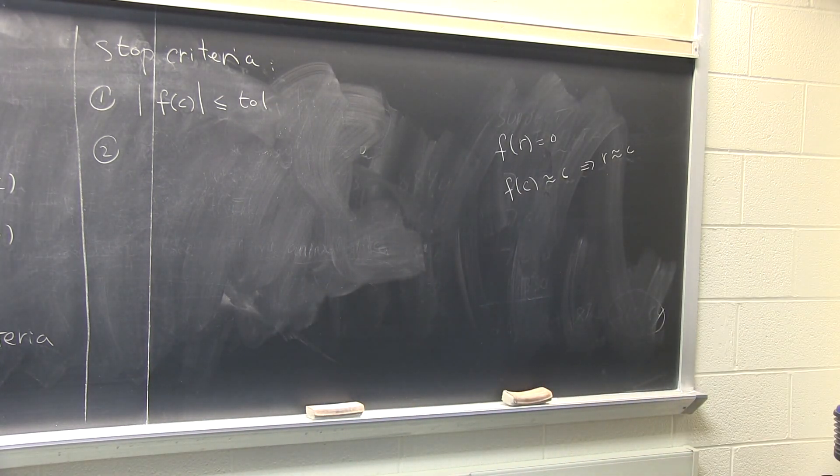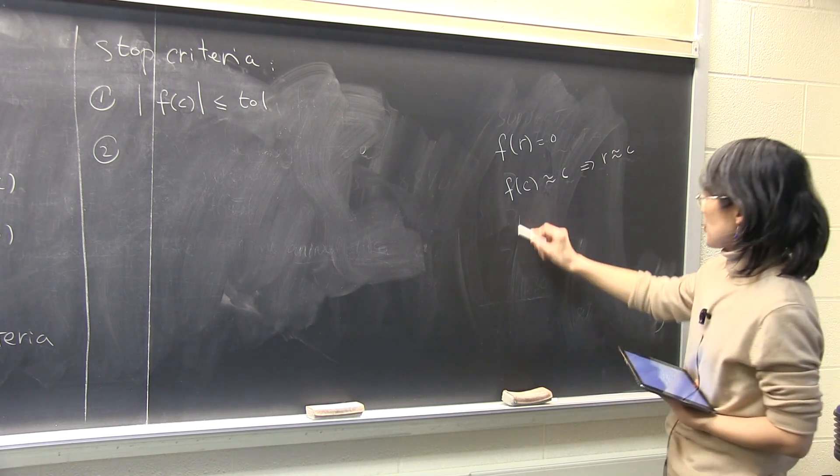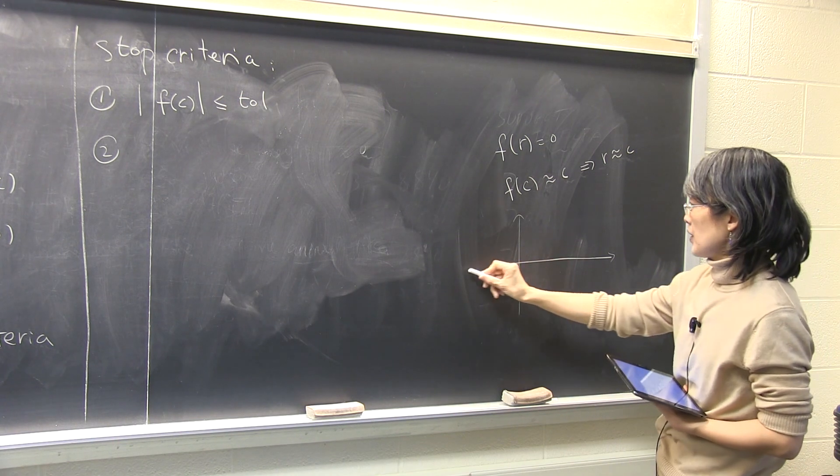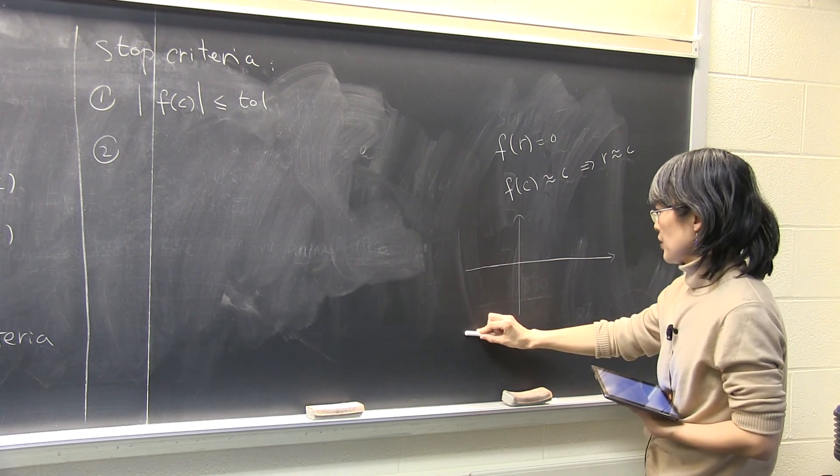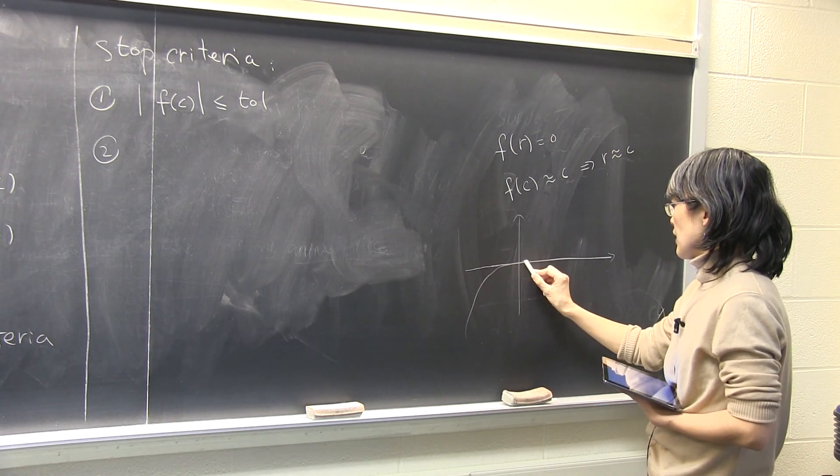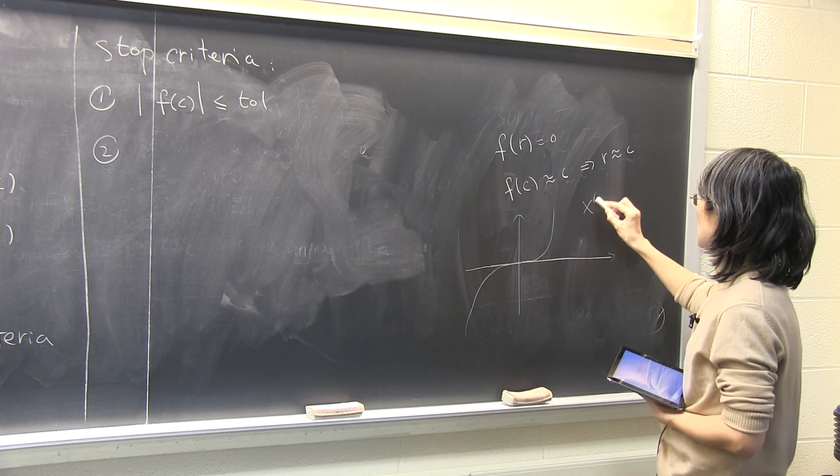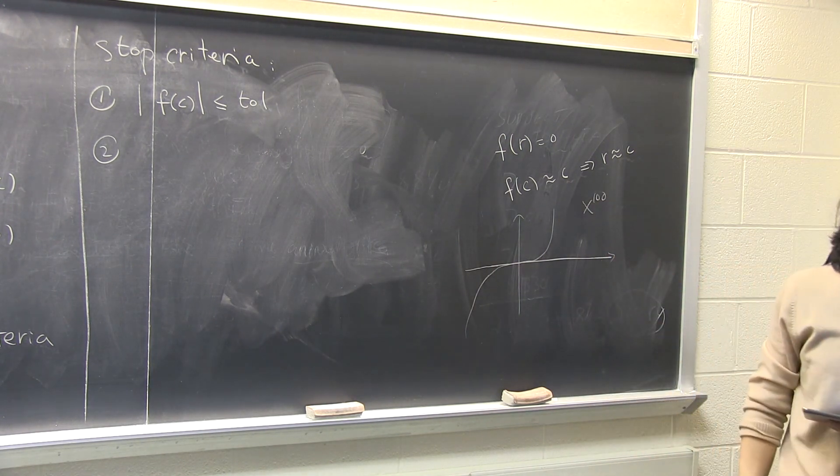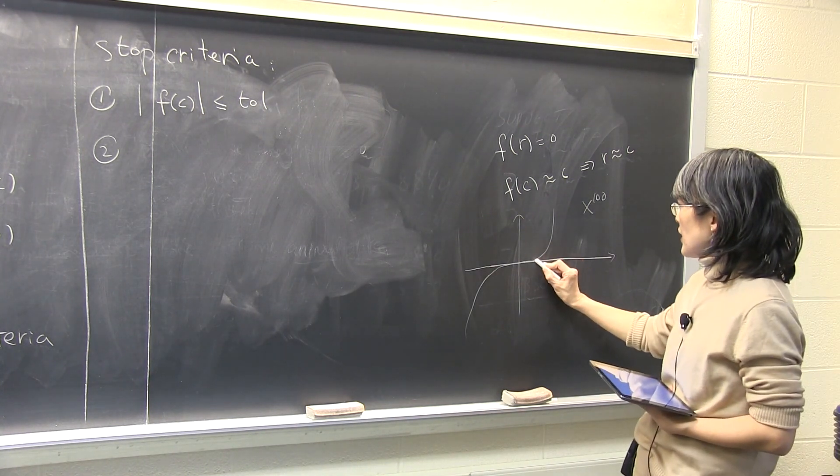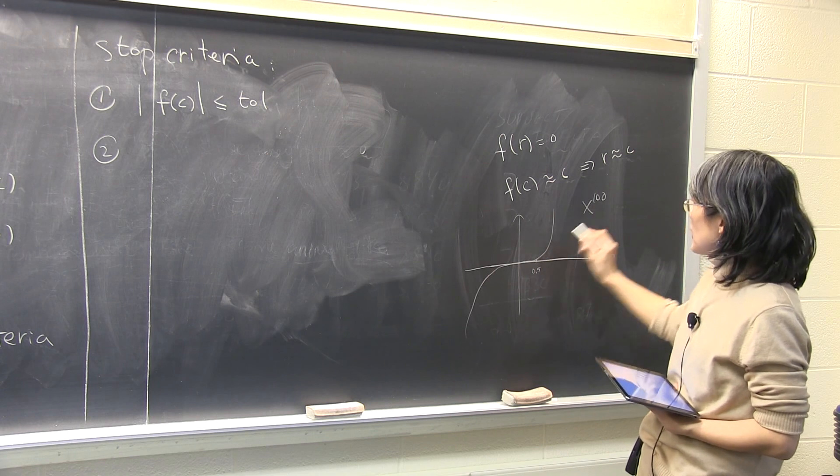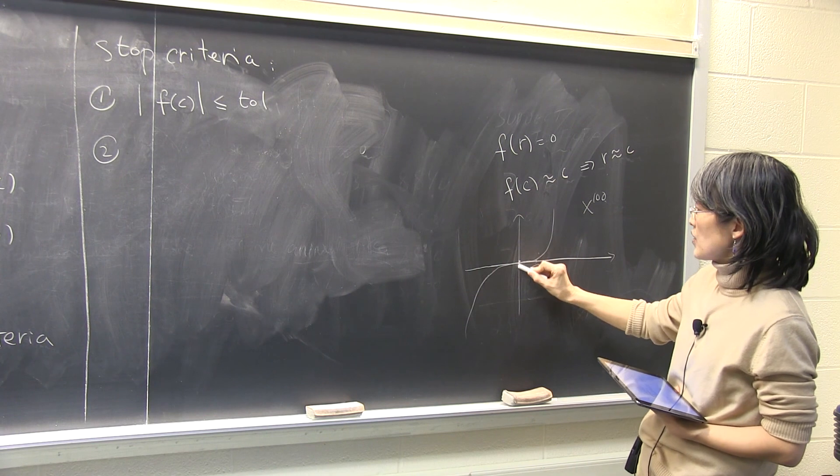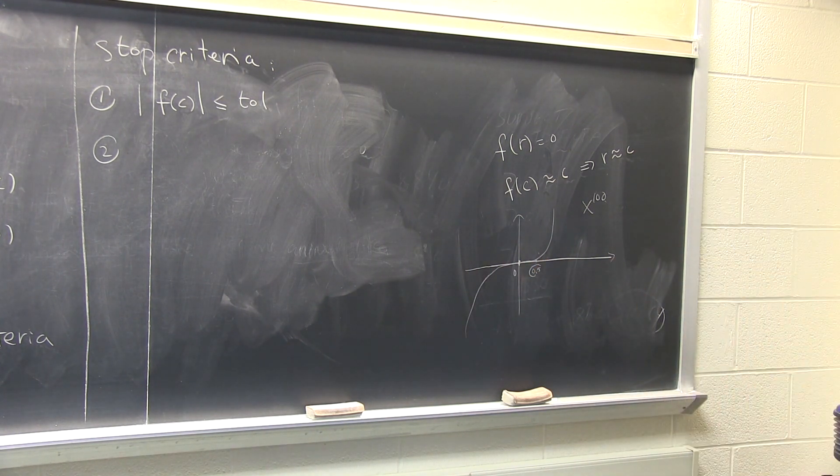This criterion could run into trouble. Let me give you something potentially not very nice. Say you have a function that looks like this, and it's really, really, really, really flat. And it comes up. Let's say x to the 100. x to the 1000. And you find a number here, 0.5 to the power 100, f of it is extremely small, and yet the root is zero, it's still far away. Do you see?